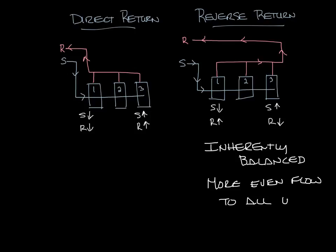You can see that the reverse return has a longer path so the direct return will have less piping which will reduce your first cost. But the benefits of having the inherently balanced system can outweigh the additional cost of the extra piping so you need to do a complete cost analysis.